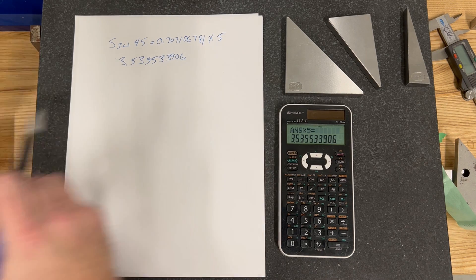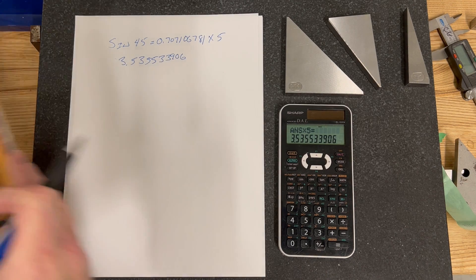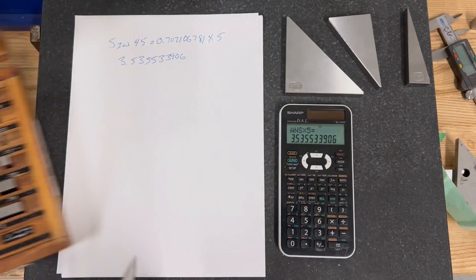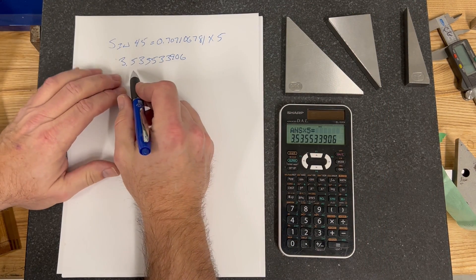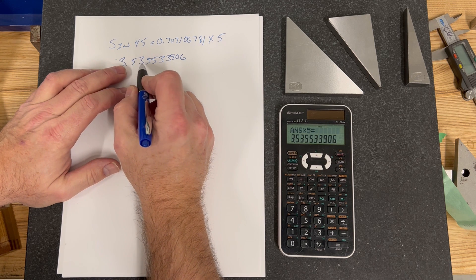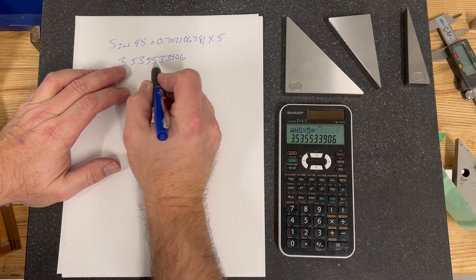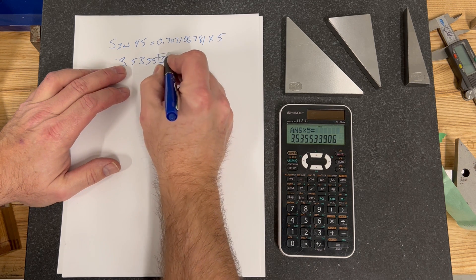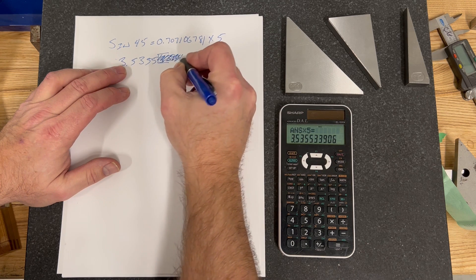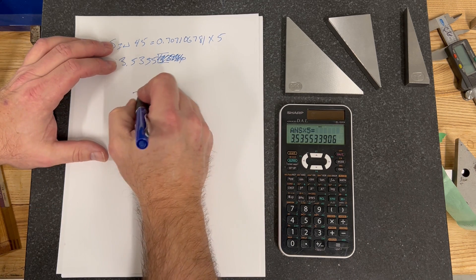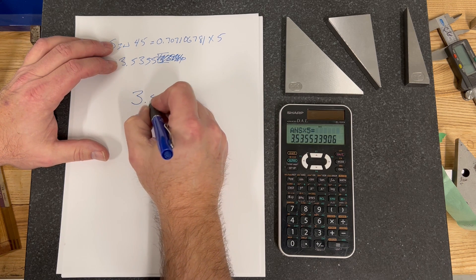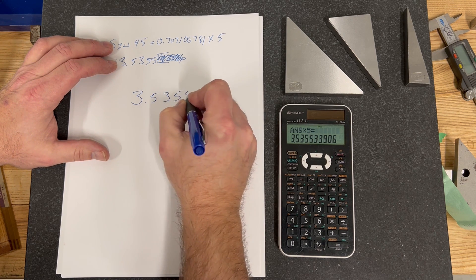Times 5 equals 3.535533906. Our gauge block set that we're going to be using, like all other gauge block sets, only goes four decimal places to the tenths. So if we take this and go 1, 2, 3, 4, this number here is smaller than 5 so it doesn't matter. So this is the gauge blocks that we're working with, 3.5355.